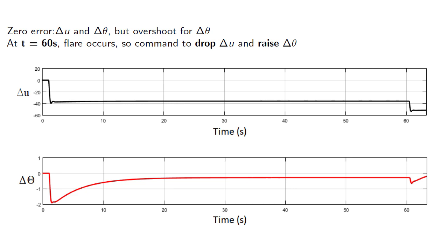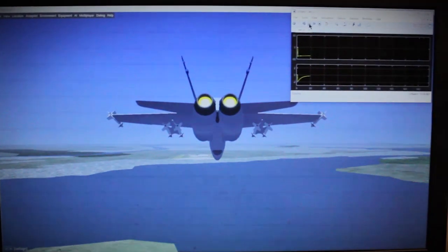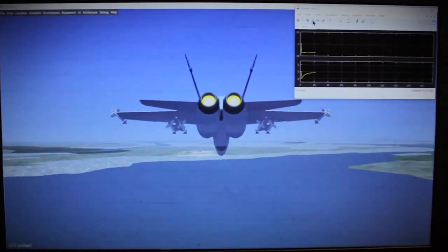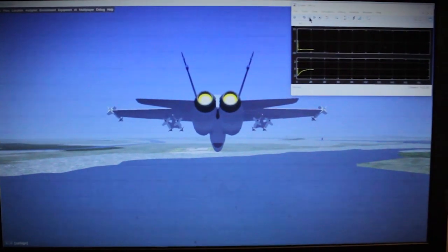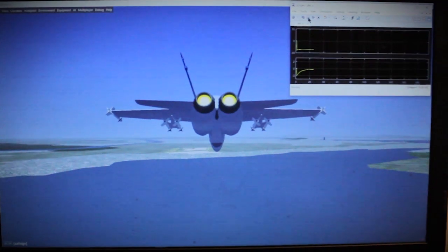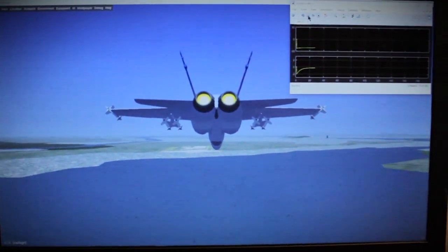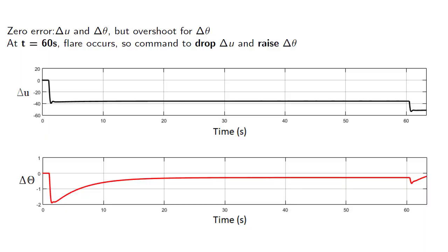When we achieved our simulation for landing at Montreal airport, we achieved very good tracking for delta U. In 60 seconds, we performed a flare, so we dropped the speed. Let's now go into Simulink and I'm going to be showing you how I used it for this project.